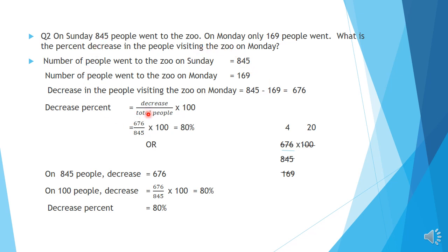Using the formula method, decrease percentage equals decrease divided by total people into 100. The decrease in number of people is 676. So 676 divided by 845 into 100. On simplification we get 80 percent.